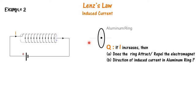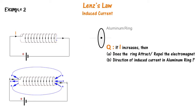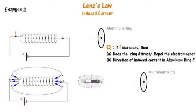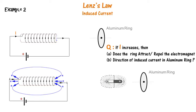Here we have an electromagnet with an aluminium ring in front of it, and the current I is increased. We first establish the direction of the magnetic field — it behaves like a bar magnet with the south pole pointed toward the aluminium ring. Increasing the current is like moving the electromagnet closer to the ring. The induced current in the aluminium ring creates a south pole facing the electromagnet, which repels it. The induced current flows in the clockwise direction.